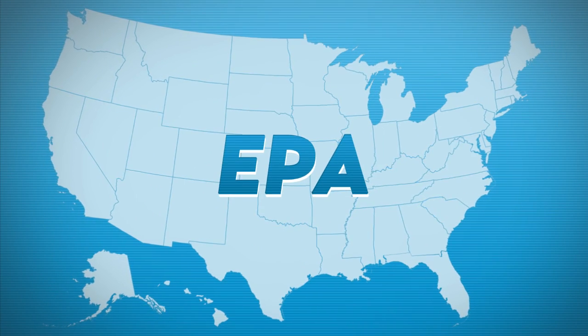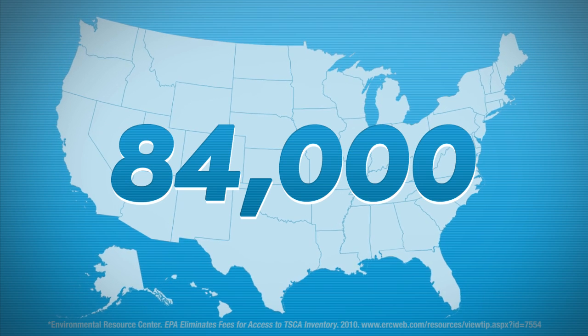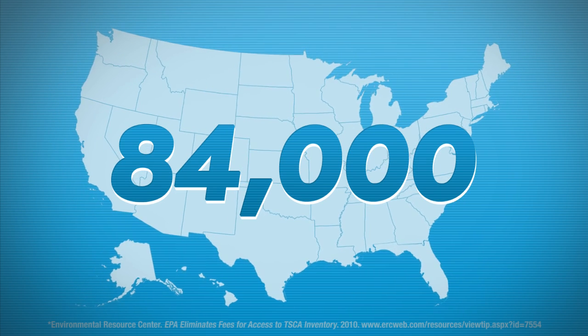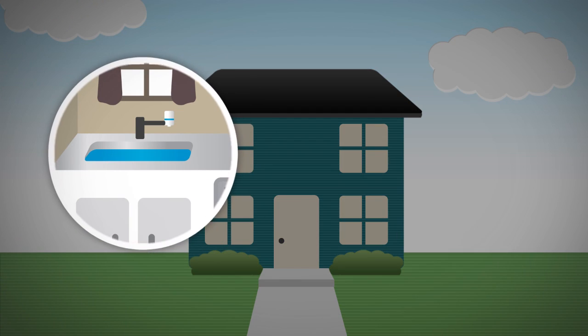According to an EPA report, there are more than 84,000 different chemicals present in the United States today, and an untold number of these might be in your water.